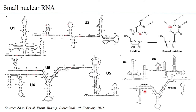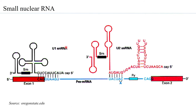Apart from pseudo-uridination, another post-transcriptional modification associated with proper functioning of the small nuclear RNA is 2'-O methylation, where the H on the ribose sugar is replaced by a methyl group. This modification is observed in many small nuclear RNAs and plays a role in how effectively the snRNA functions.